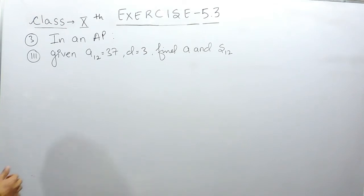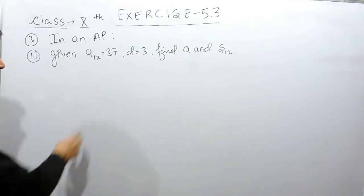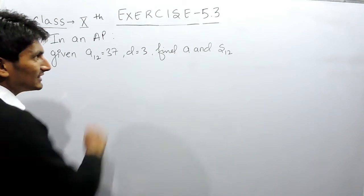In this case, you are given that there are 12 terms in an AP where the 12th term is 37 and the common difference in that AP is 3.